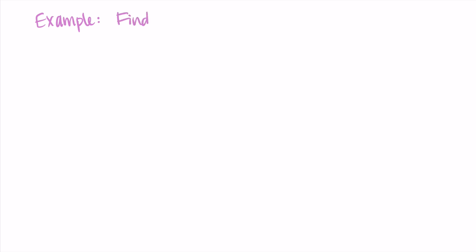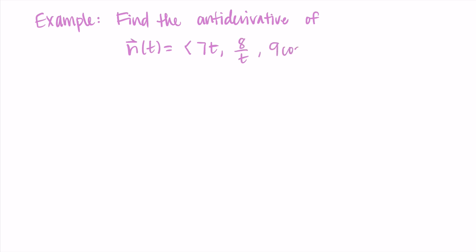Let's try an example. It might have been a while since you've done integrals, so give yourself some patience — it might take a little review. Find the antiderivative of the vector n(t) = <7t, 8/t, 9cos(t)>. Pause and try this on your own, remembering to take the integral of each component.